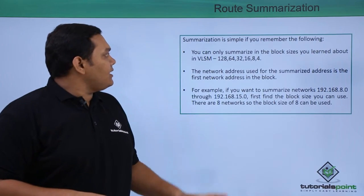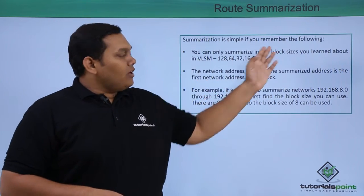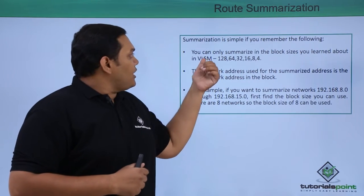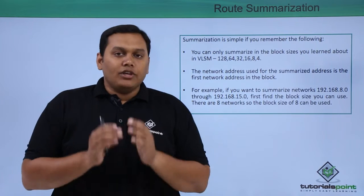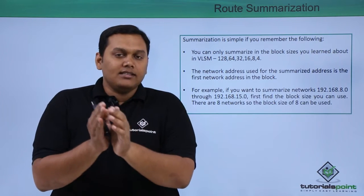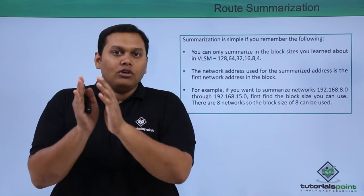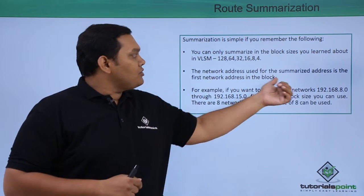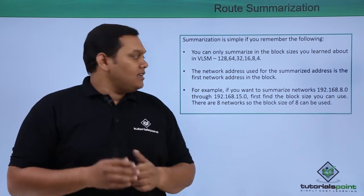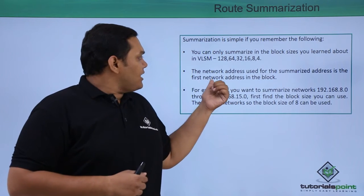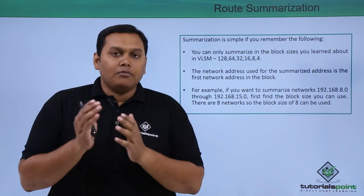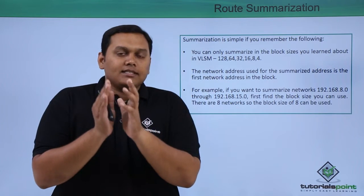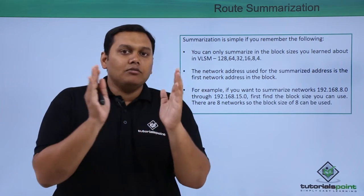If you remember the following rules, you can do route summarization very easily. You can only summarize in block sizes — that is 128, 64, 32, 16, etc. The network address used for the summarized address is the first network address in the block.